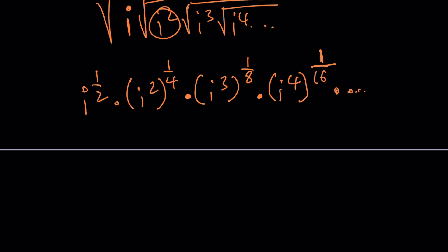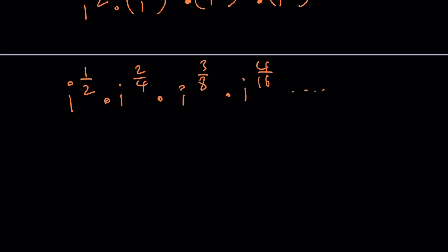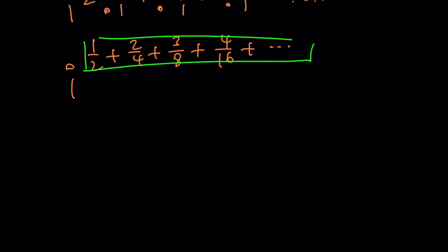Now we can write with rational exponents: i to the power one half, i to the power two fourths—by the way, don't simplify that—i to the power three eighths, and i to the power four over 16, and so on. Now we can add the exponents, and this is where the magic or mathematics begins. We're going to be concerned with the exponent. How do you evaluate that? Let's focus on that, and you can go back and make it a power of i.